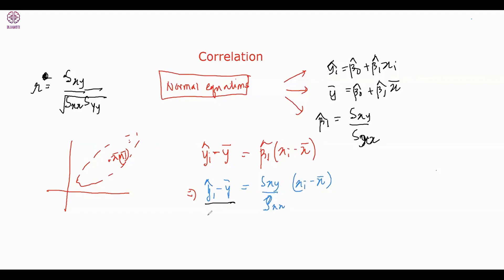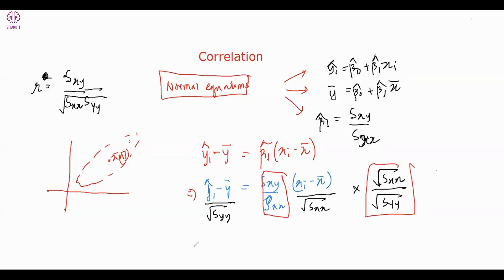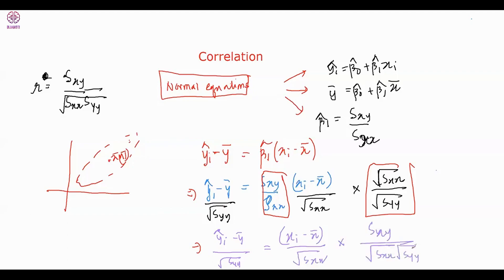To standardize, we divide by √SYY and divide by √SXX, and multiply through accordingly. Combining these terms, we get the beautiful result: (ŷᵢ − ȳ) / √SYY = [SXY / (√SXX · √SYY)] · (xᵢ − x̄) / √SXX. The factor in brackets is precisely the correlation coefficient r.